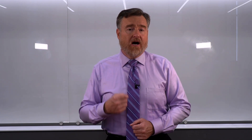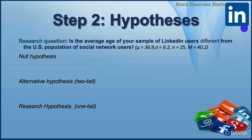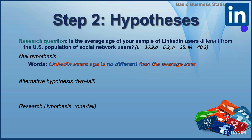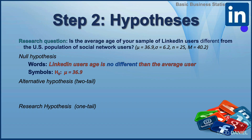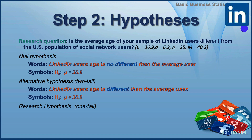Step two: establish our null and alternative hypotheses. In words, the null hypothesis is that LinkedIn users' age is no different than the average social media user. In symbols: H₀: μ = 36.9. For the two-tailed alternative hypothesis, in words: LinkedIn users' age is different than the average user. In symbols: H₁: μ ≠ 36.9.